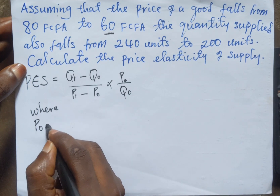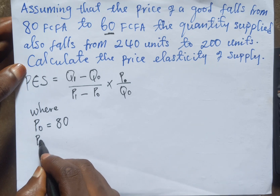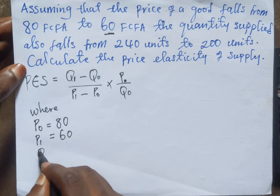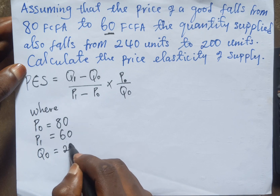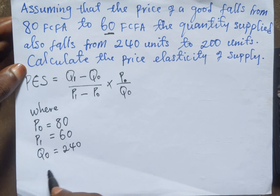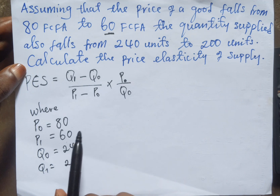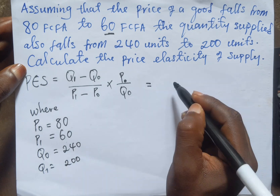We can then sort out these variables. So P0 is 80, then P1 will be 60, and Q0 will be 240, then Q1 will be 200. We will then substitute these various figures into the formula.